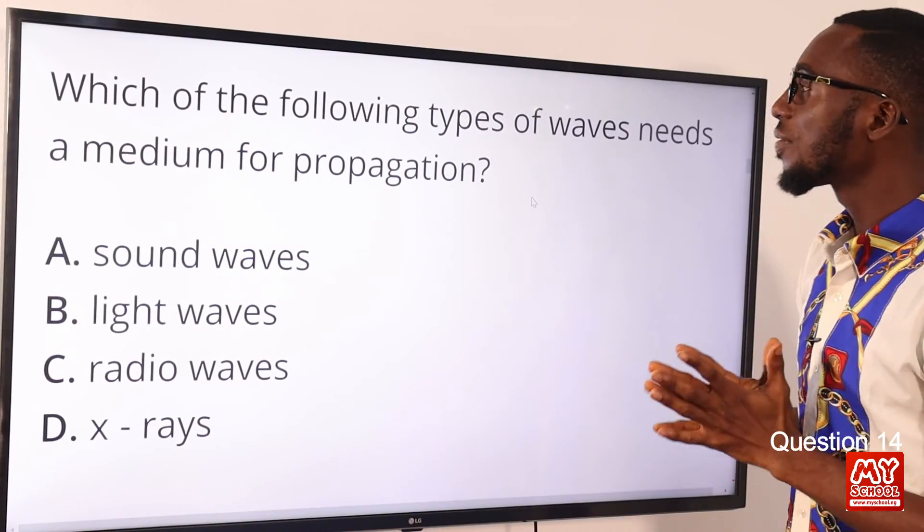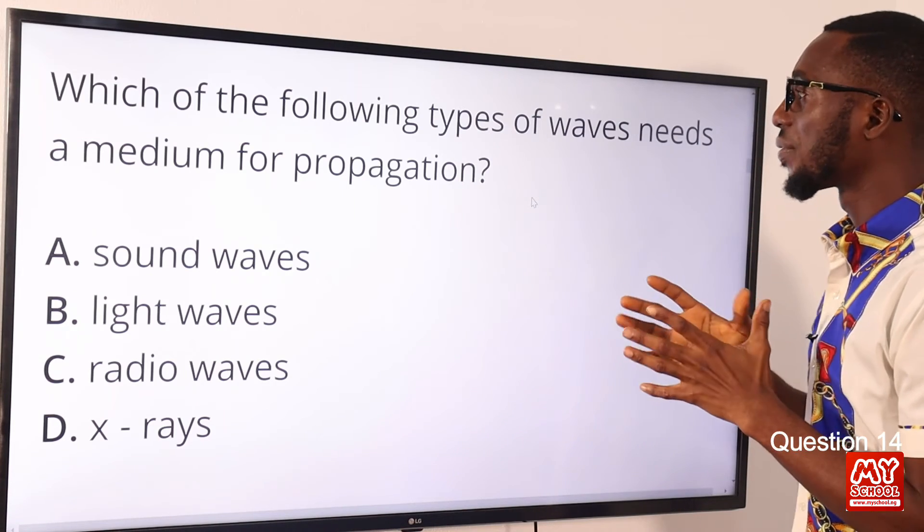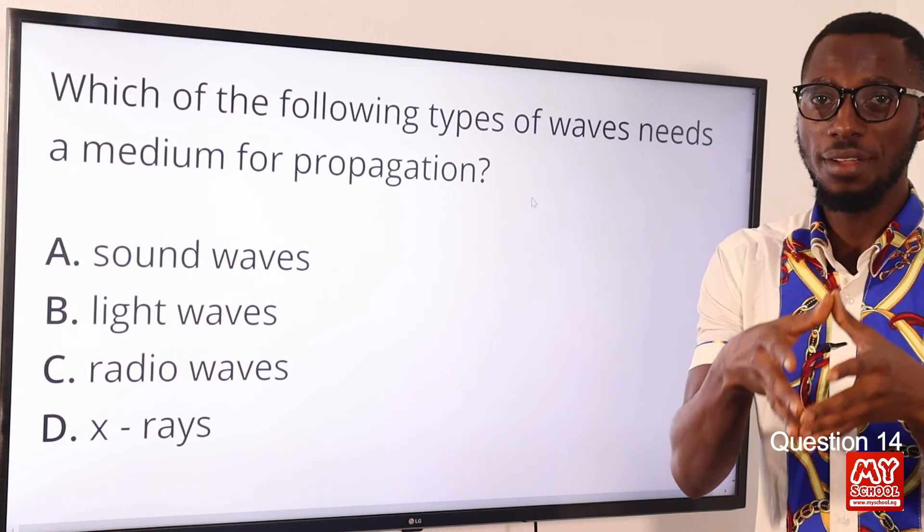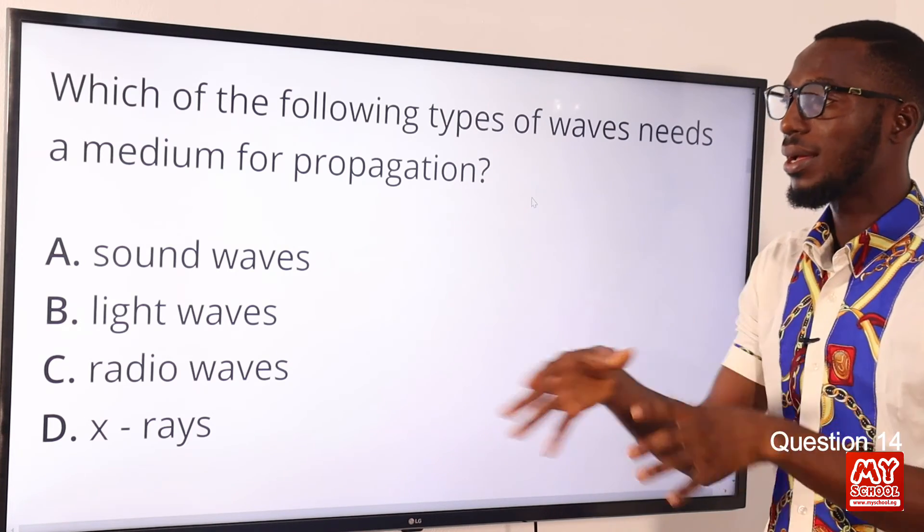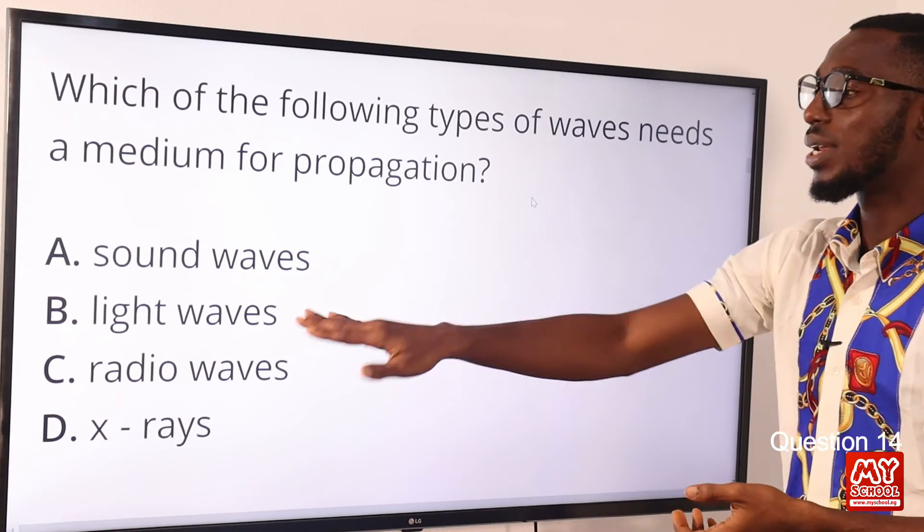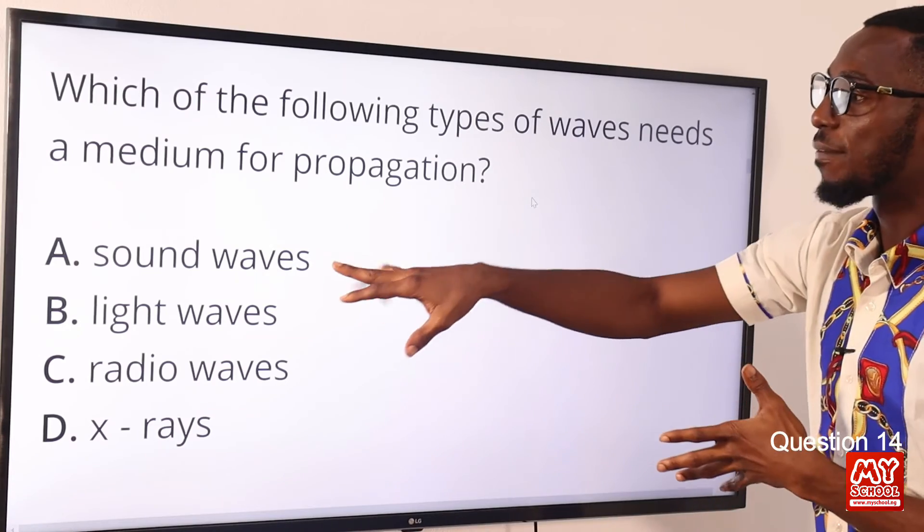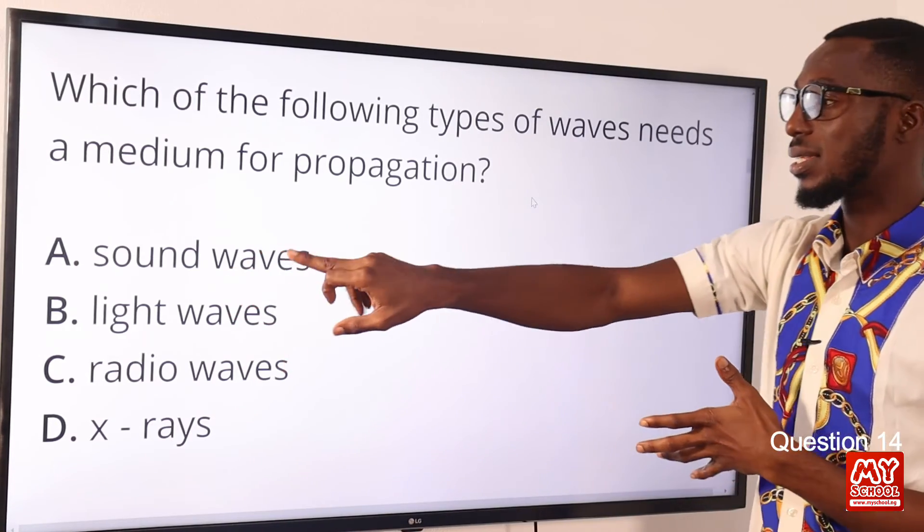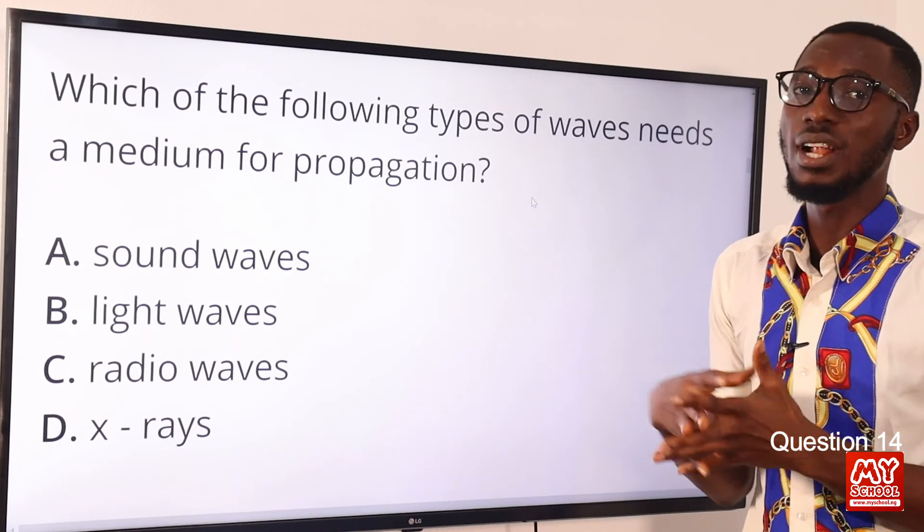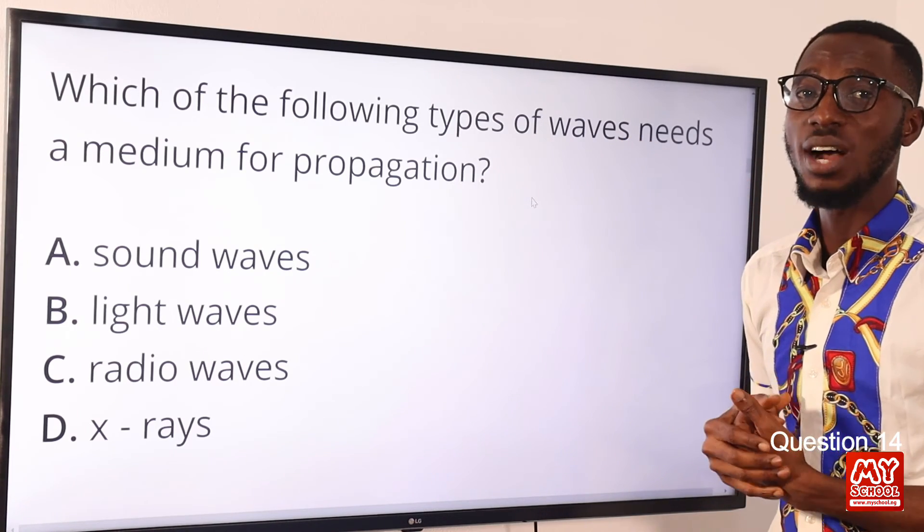Question 14. Which of the following types of waves need a medium for propagation? So any type of wave that requires medium for propagation is a mechanical wave. So we have examples like sound wave, water wave and what have you. So every other one we have here, they are not mechanical waves. So the only type of mechanical wave that we have provided here is sound wave. It requires a material medium for its propagation. And sound cannot travel in a vacuum. So the correct option here is option A for sound waves.